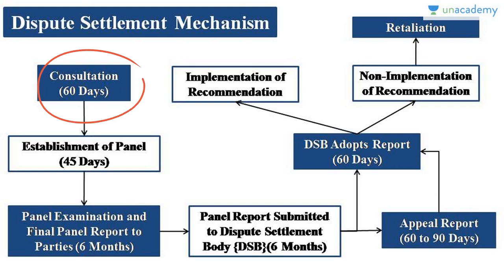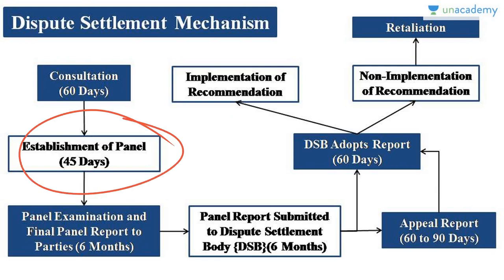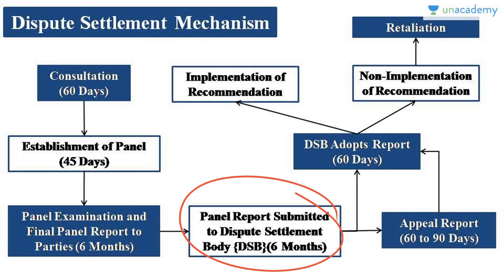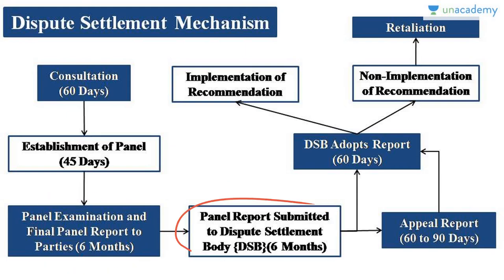After 60 days, if the dispute is not resolved, a panel is established within 45 days. This panel reviews the dispute, examines what the dispute between India and China is, and makes a report. This report is submitted to the Dispute Settlement Body. Remember — the Dispute Settlement Body is the General Council, which sometimes assumes that role.